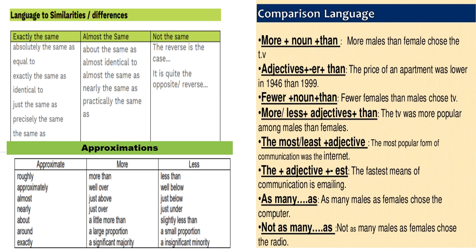When you are comparing who does something more — boys or girls — if boys do it more, say 'more boys than girls.' More males than females, more students than teachers, more doctors than engineers — that's how you compare based on the keywords given in the question. You will also use adjectives with '-er and than.' For example: the price of an apartment was lower in 1964 than 1999. You can also use 'fewer and than' — fewer females than males chose TV.